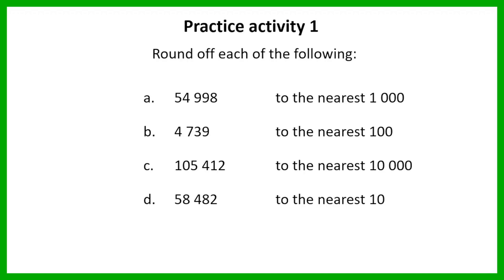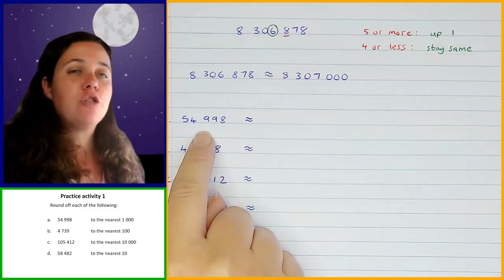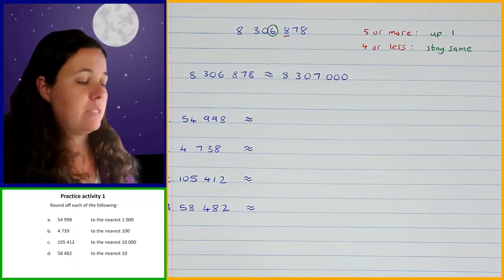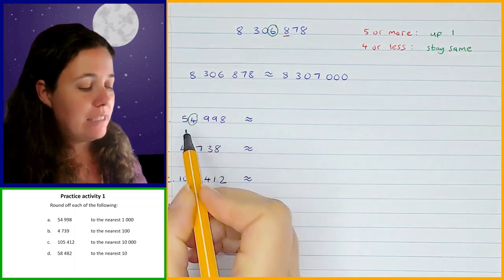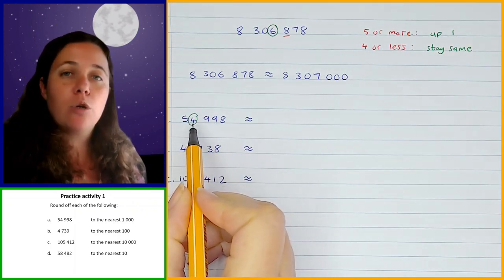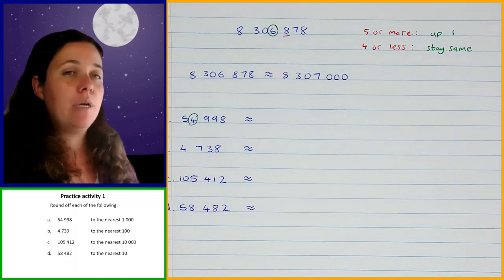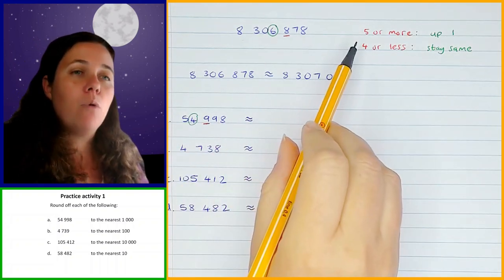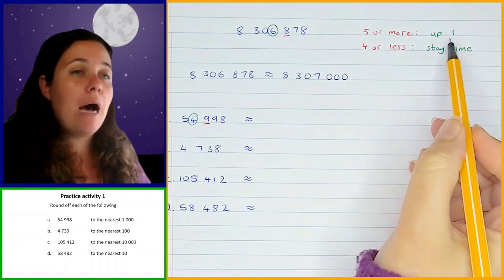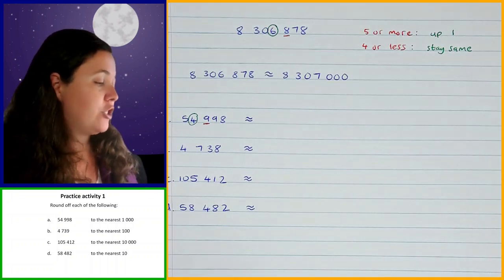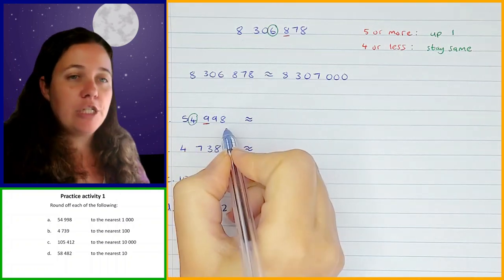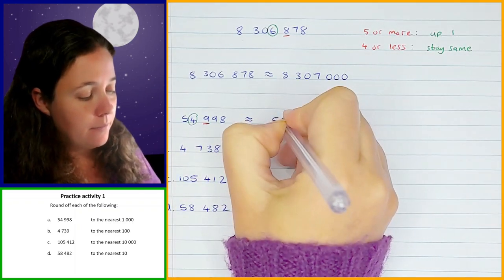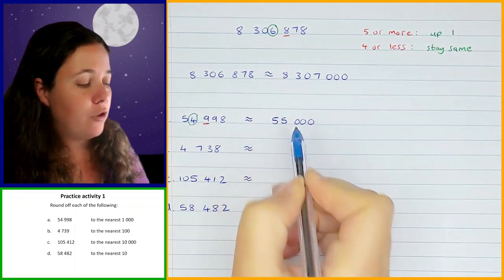Let's see what you got for each of those. In the first one, you had to round off to the nearest thousand. The four is in the thousandth position. Looking at the digit straight after it — the nine — nine is in the five or more category, which means the four goes up one and changes to five. Everything after that changes to zero. So you should have got 5,000.